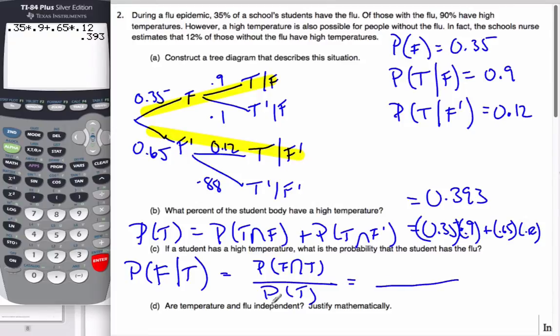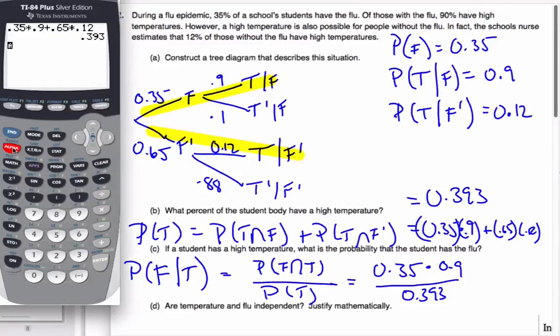Well, conveniently so, the probability of temperature, having a high temperature, is 0.393. I calculated it up here first. And then probability of flu and temperature is the top branch, which is 0.35 times 0.9. And if I do this calculation here,